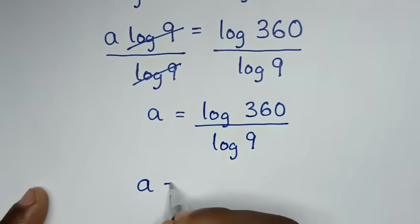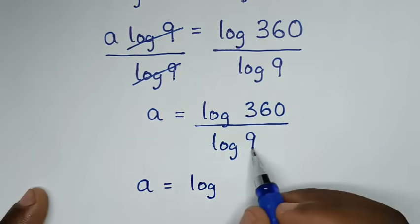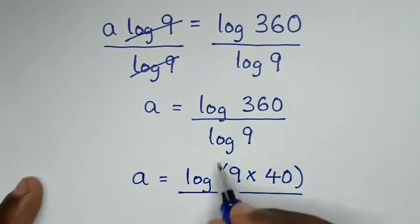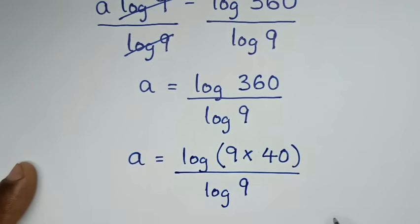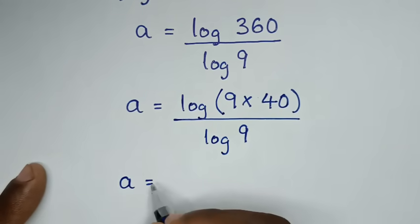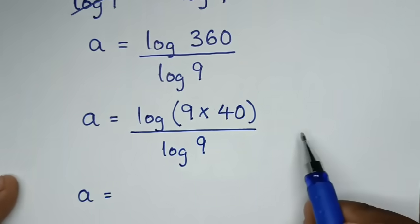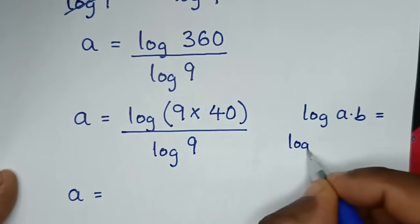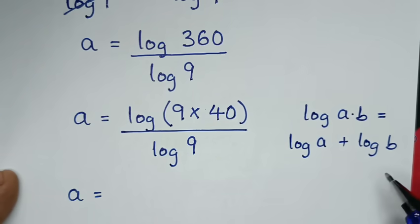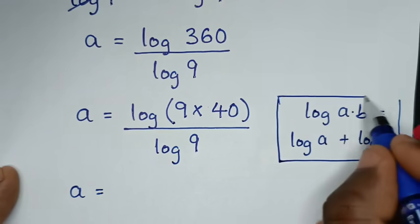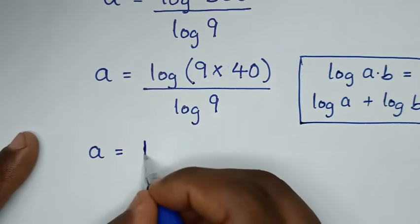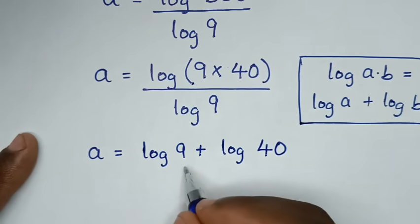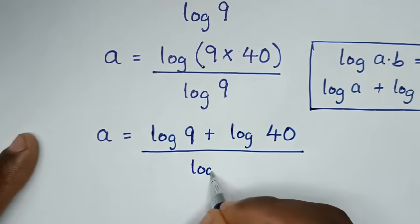Then in the next step, it will be a is equal to log of 360. Now 360 is the same as 9 times 40, then bracket over log of 9. So it will be a is equal to log of 9 times 40 over log of 9. This part is in the form of log of a times b, which is equal to log of a plus log of b. So from this rule, it will be log of 9 plus log of 40 over log of 9.